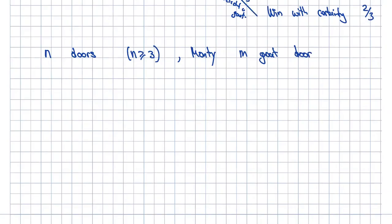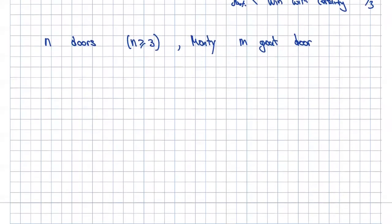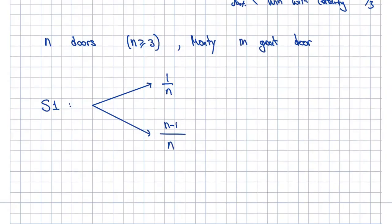Interestingly, someone actually wrote a paper on this showing it's always to your advantage to switch doors. All participants eventually figured this out and everyone was switching, so they had to stop that idea on the show because it didn't make sense anymore once people figured out they could double their probability of winning by switching. Now in the generalized problem with N doors: strategy one is stick with your original door. The probability of winning is one over N, and with probability (N minus one) over N you're not going to win.